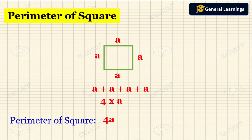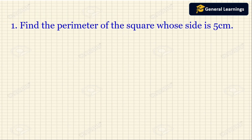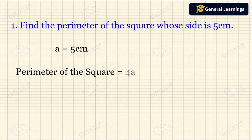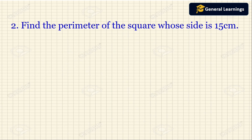Now we will see an example of how to find the perimeter of a square. Find the perimeter of a square whose side is 5 centimeter. So a equals 5 centimeter. The perimeter of the square is 4a, so 4 into 5 centimeter equals 20 centimeter. The perimeter of the square is 20 centimeter.